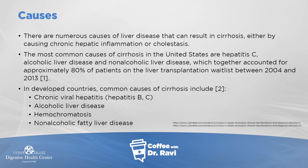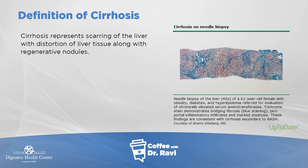Cirrhosis is commonly associated with alcohol, but there are other causes. What I have on this slide is a sample that we can take out of the liver and look at under the microscope. If you take a needle, take a piece of tissue and put it under the microscope, this is how that will look. The blue is the scar tissue and the pink is the regenerating nodules, and a combination of this is what's called cirrhosis.